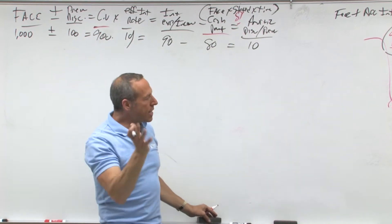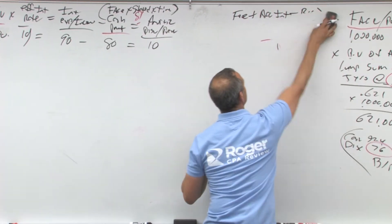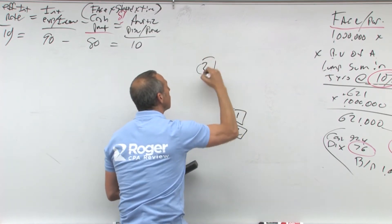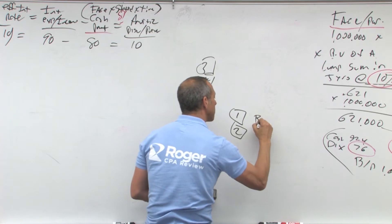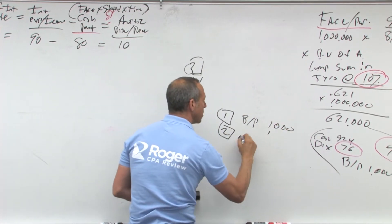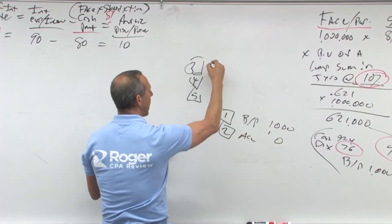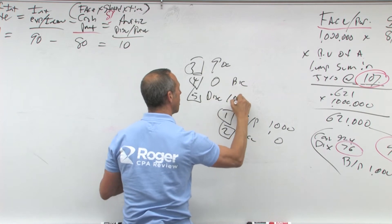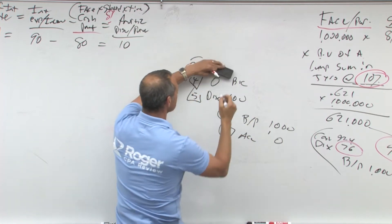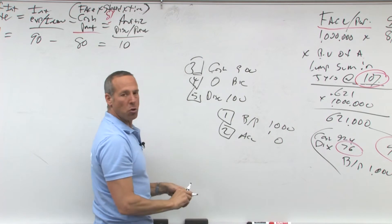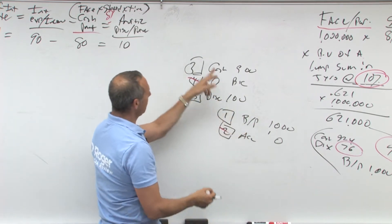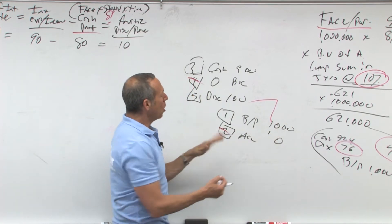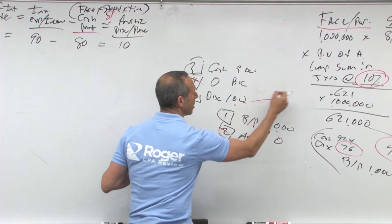When we go through the discount, the first journal entry is: credit bonds payable for a million, debit cash for 900, debit discount for 100 — difference is the discount, carrying value is 900. In most questions they just give you: credit bonds payable, debit cash, difference is discount or premium. So face is a million, discount is 100, carrying value is 900. Stated rate is 8%, effective rate in this discount case is 10%.